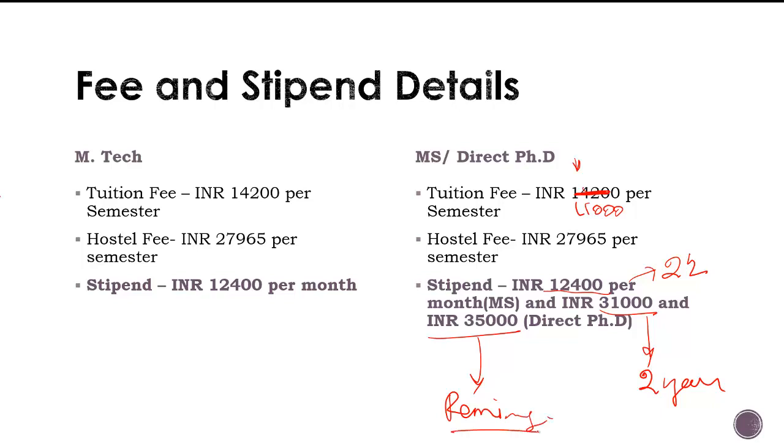So if you calculate, try to calculate what will be your expense, the net will be positive on yourself. What I mean by that, if you have tuition fee and hostel fee for semester and you subtract it from the total stipend that you will be getting in the semester, you will have money left in your hand. So ultimately at the end of the course, you will be having an extra edge over what you actually paid to the department or the dean's office.